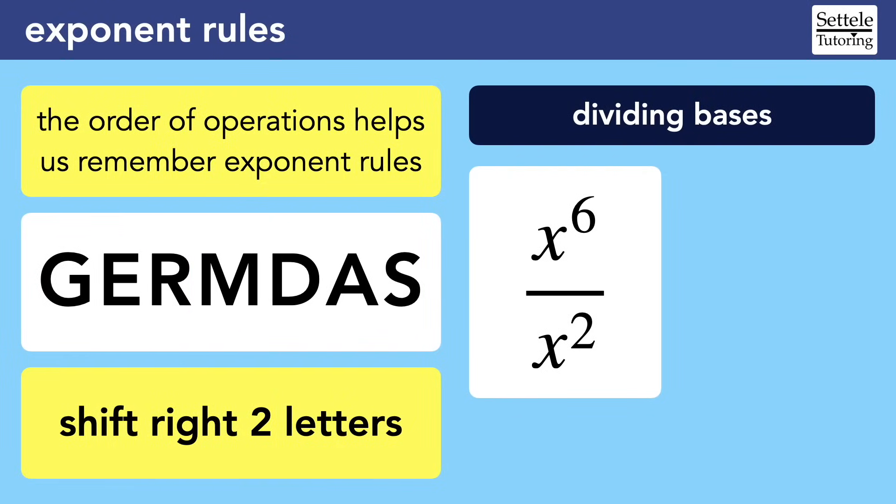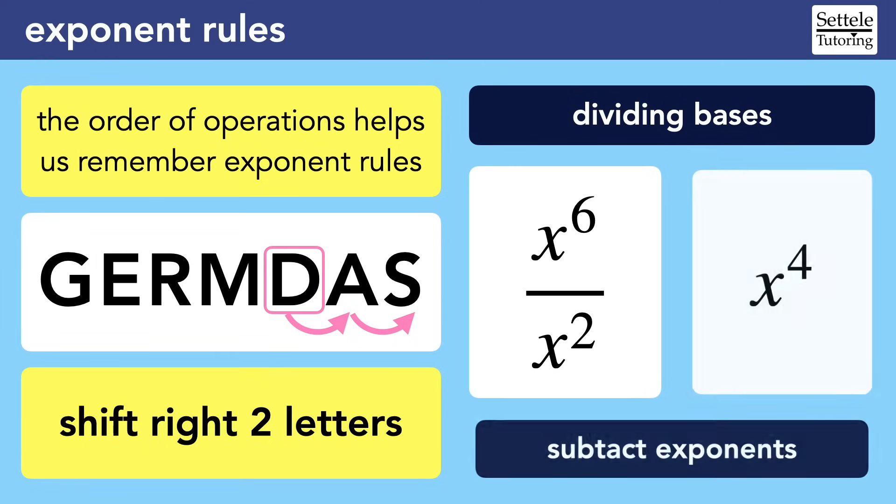Let's look at another example. In this case, we're dividing the bases. That's the D in GERMDAS. Shifting right two letters, we know to subtract the exponents. So X to the sixth divided by X squared is X to the fourth, because 6 minus 2 is 4.